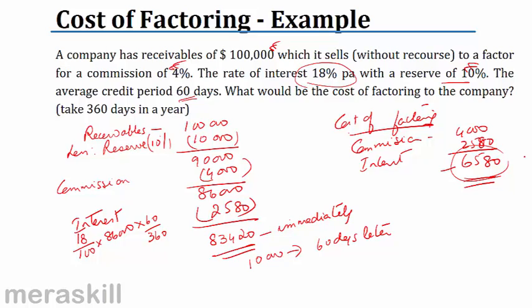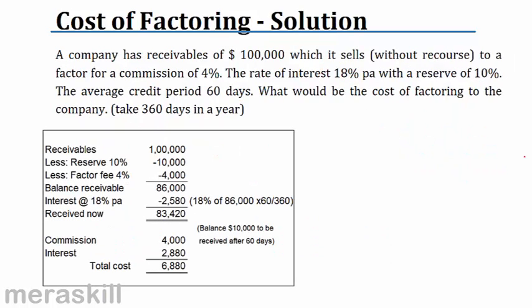Let us go through this once more with a neater presentation. Look at this. The receivables are $100,000. Reserve is at the rate of 10%, $10,000. Factor fee, 4% of $100,000, $4,000. So I have left with $86,000. Interest is at the rate of 18% per annum. So 18% on $86,000 times 60 by 360. This should be $2,580 is the interest. So $83,420 is received now. And the balance, $10,000, that's not a cost. I will get $93,420 totally. So $10,000 will be received after 60 days. My total cost is $4,000 and $2,580, so it is $6,580.